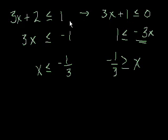Now, did we get the same answer when we did it both two different ways? Here we got x is less than or equal to negative 1 third. And here we got negative 1 third is greater than or equal to x. Well, that's the same answer. x is less than or equal to negative 1 third.